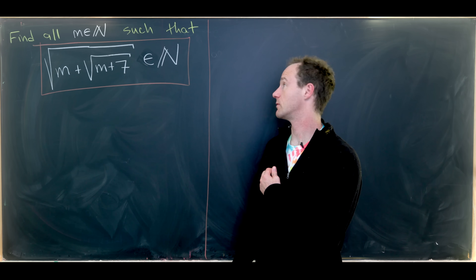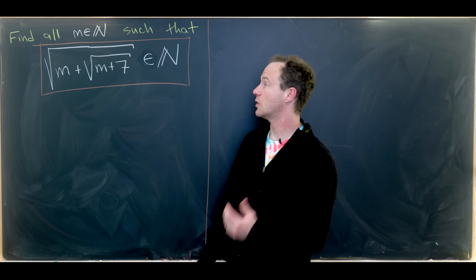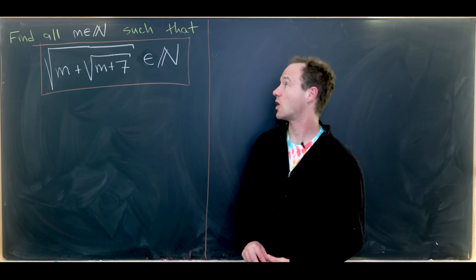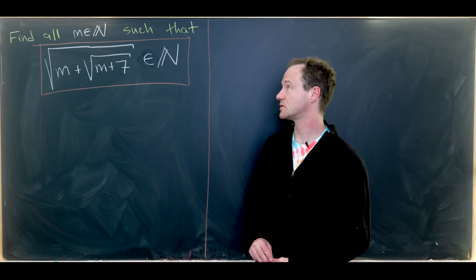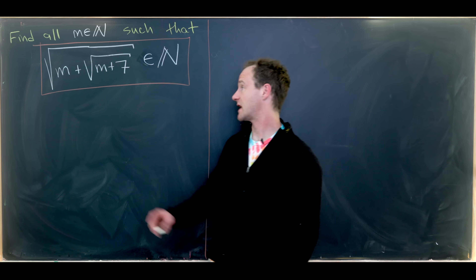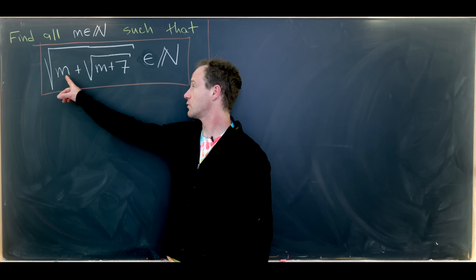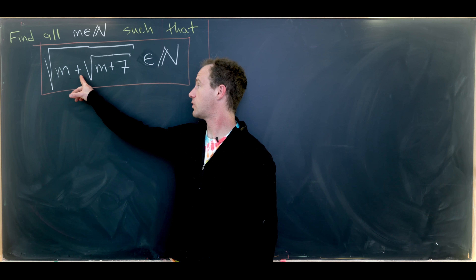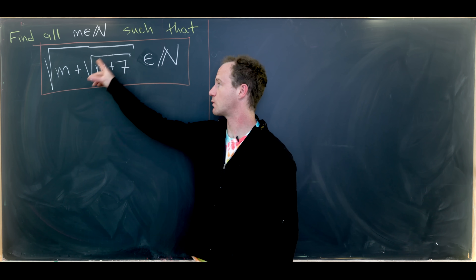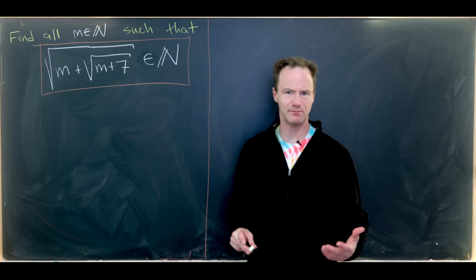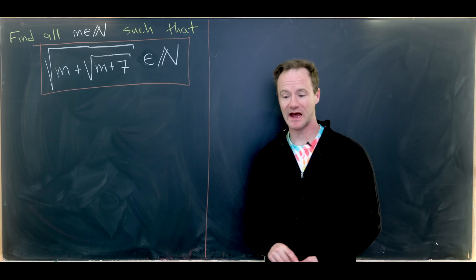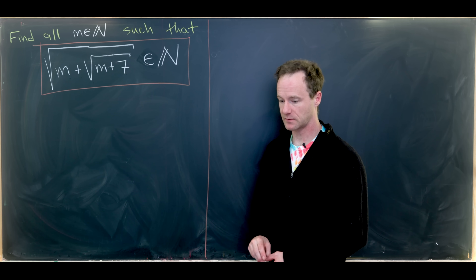Today I've got a pretty nice problem. Our goal is to find all natural numbers m so that the square root of m plus the square root of m plus 7, where we have that embedding of square roots, is also a natural number.